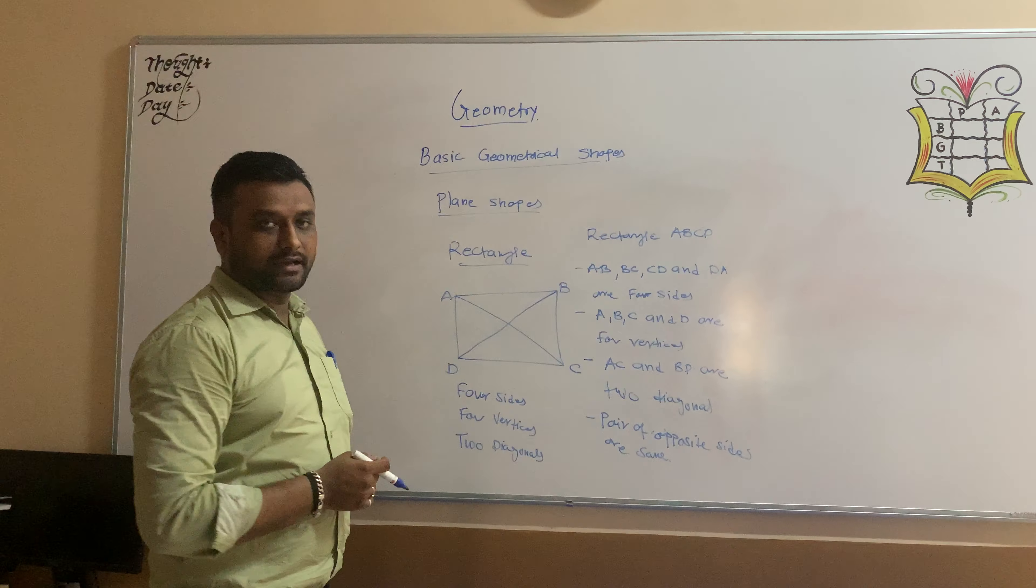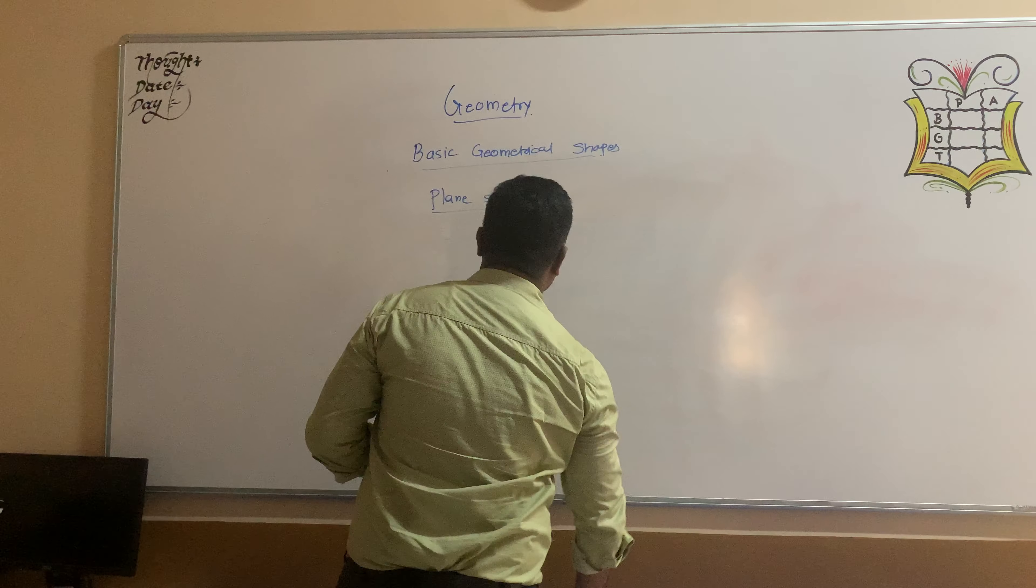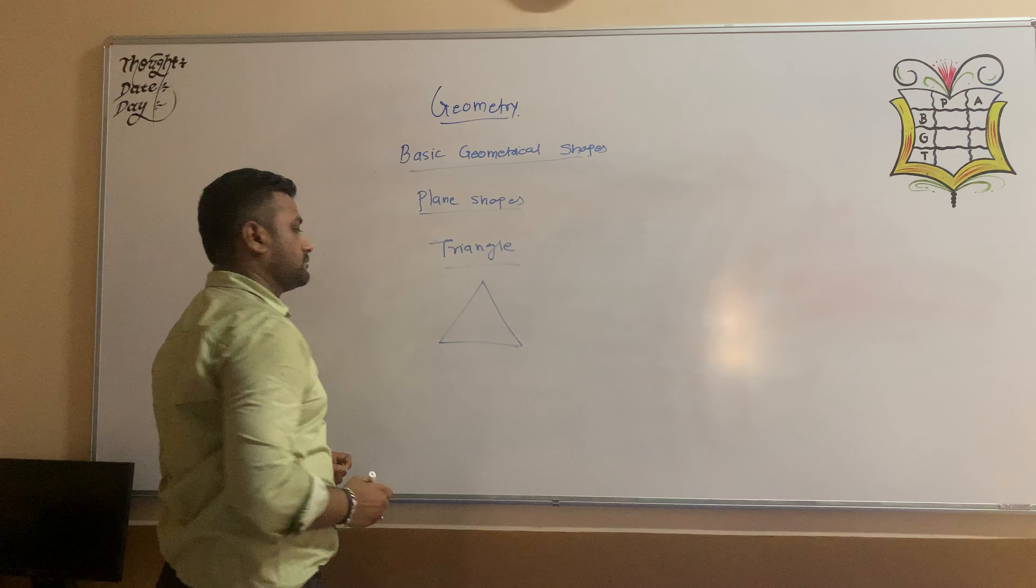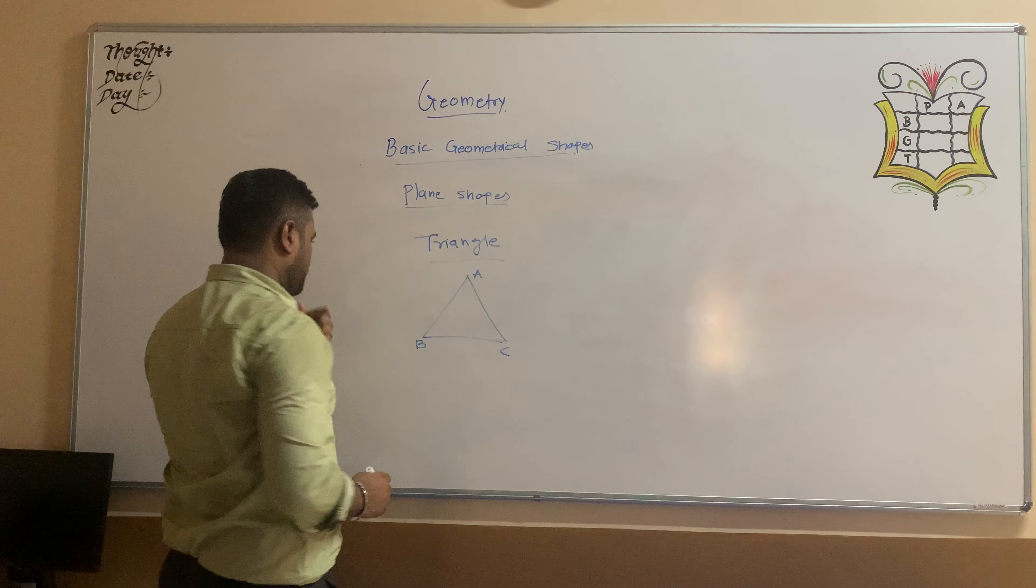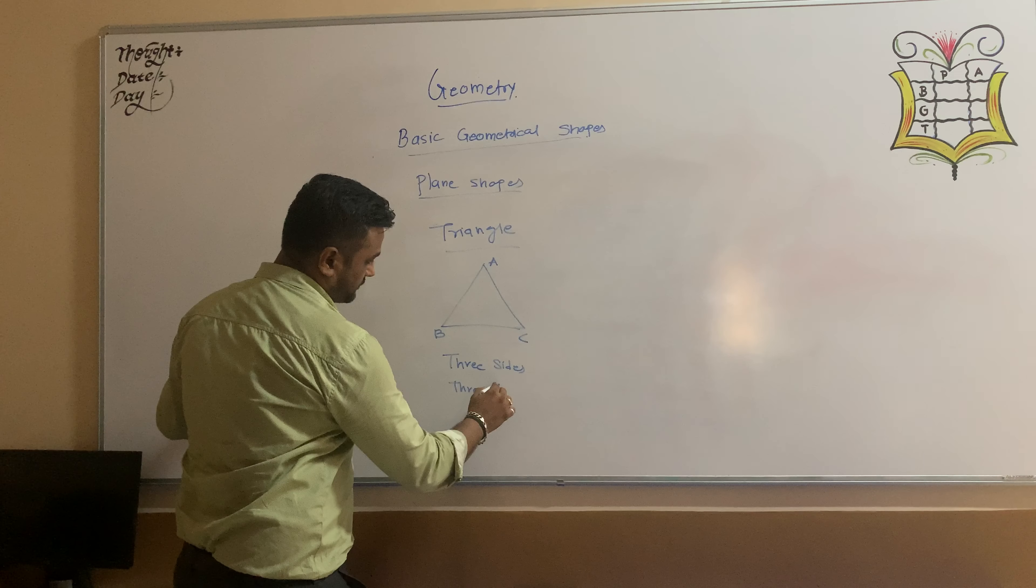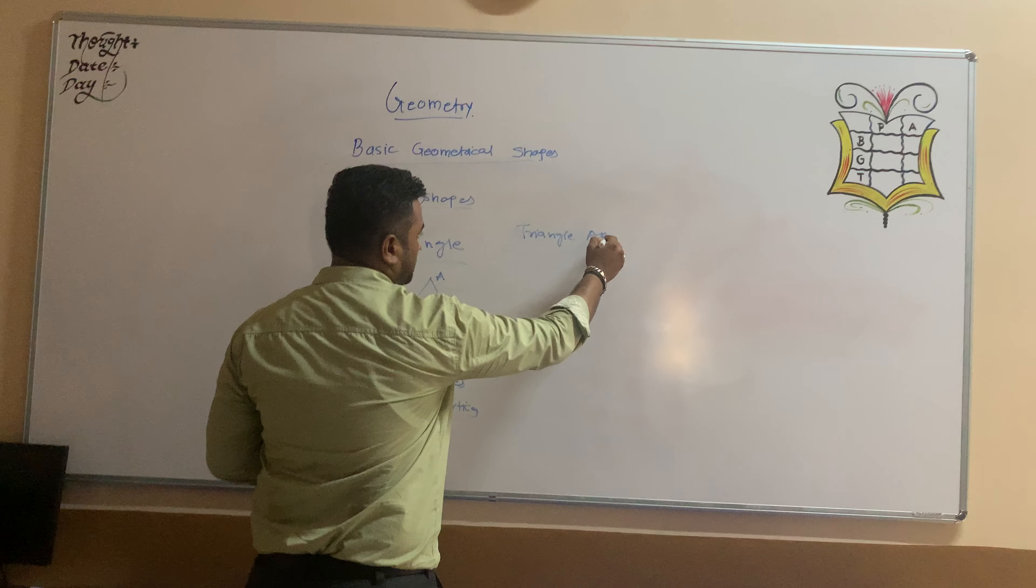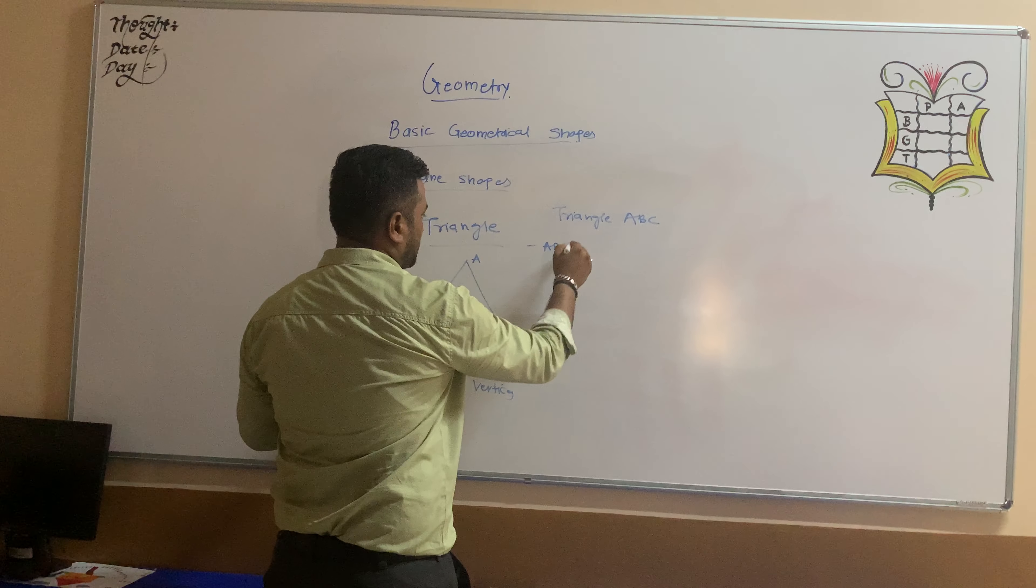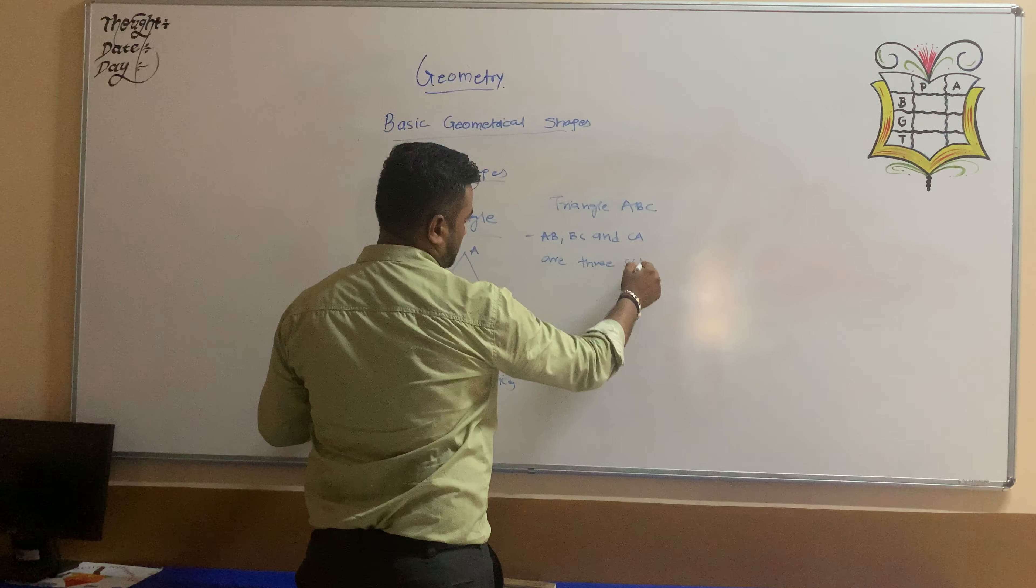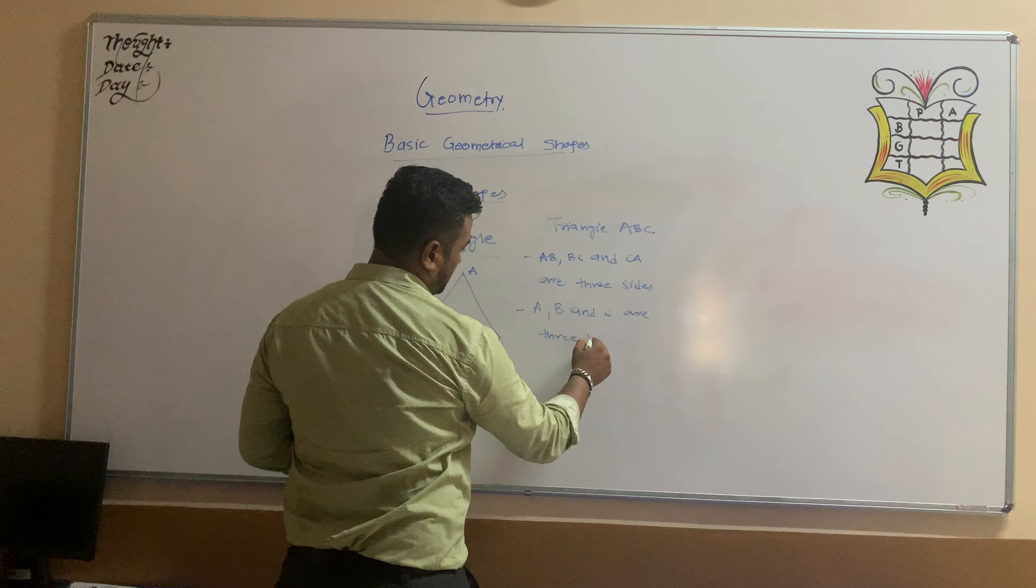This is your second plane set Rectangle. The third plane set is Triangle. In Triangle, as you can see in the diagram, Triangle ABC. So you can see Triangle having three sides and three vertices. So in Triangle ABC, AB, BC and CA are three sides. A, B and C are three vertices.